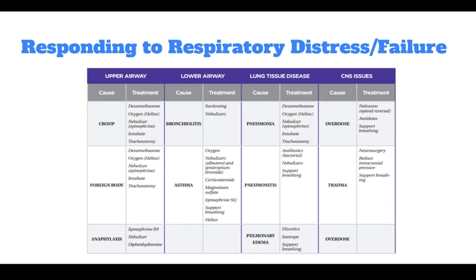For CNS issues such as an overdose, you could treat with naloxone, antidotes, and support breathing. For trauma, treatments include neurosurgery, reducing intracranial pressure, and support breathing.